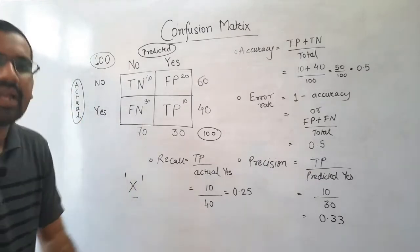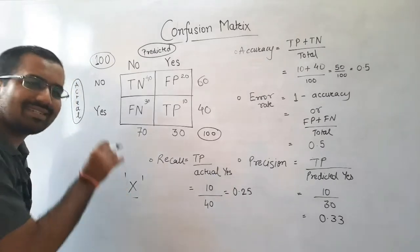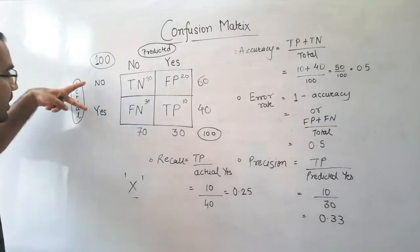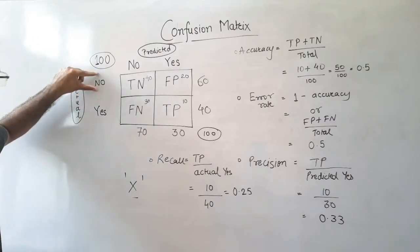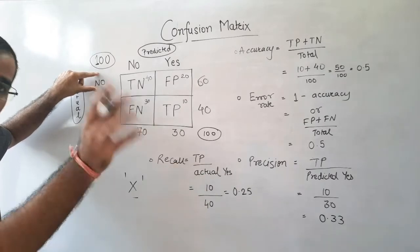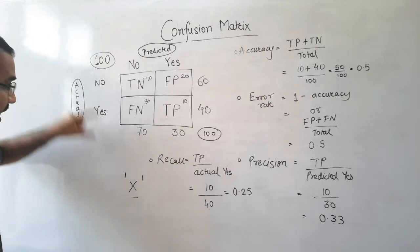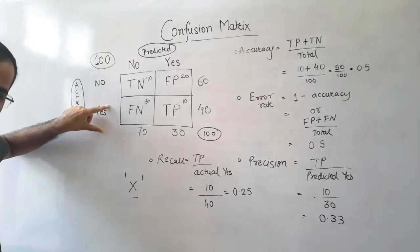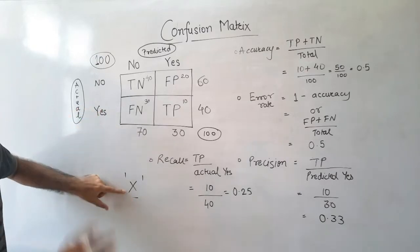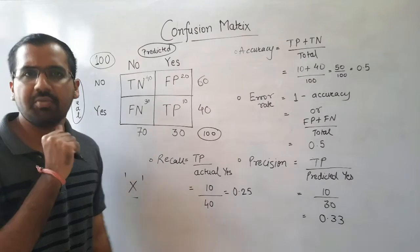What do we mean by actual values? Actual means in reality, in actuality, whether a particular patient has disease X or not — yes or no. 'Actual no' means in reality the patient does not have disease X. 'Actual yes' means in reality that respective patient does have disease X.